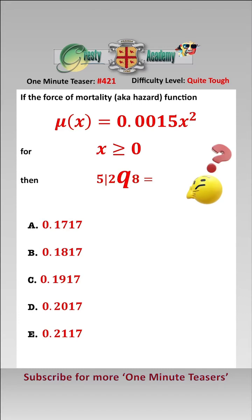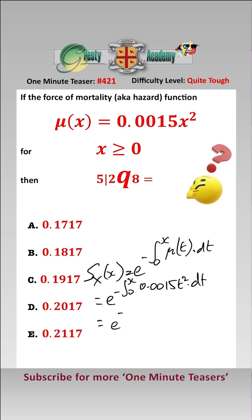Firstly, we need to find our survivor function S(x), which equals e to the minus the integral between 0 and x of our force of mortality function μ(t)dt. That equals e to the minus the integral between 0 and x of 0.0015t² dt, which equals e to the minus 0.005x³.